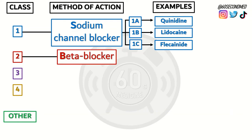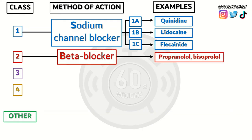Class 2 are beta blockers, with examples being the classic beta blockers such as propranolol and bisoprolol.